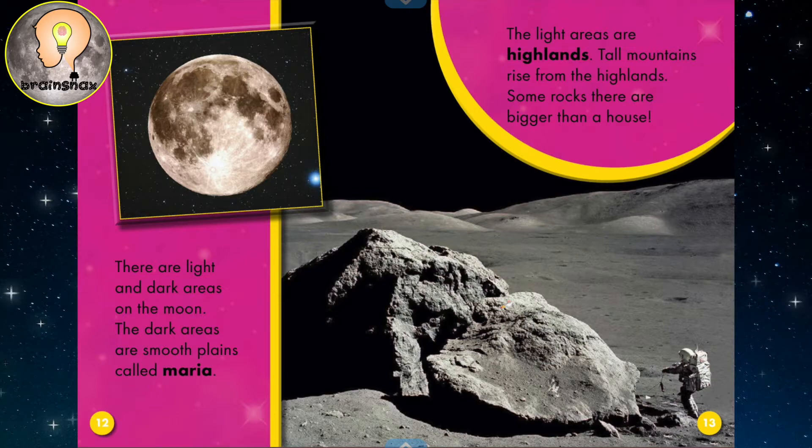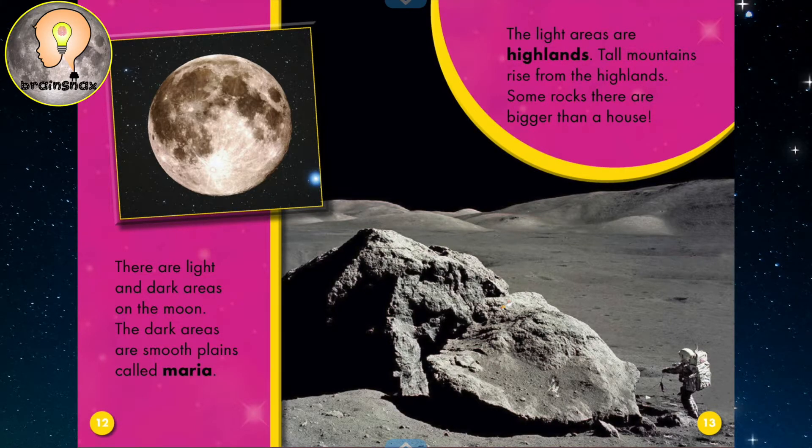There are light and dark areas on the moon. The dark areas are smooth plains called maria. The light areas are highlands. Tall mountains rise from the highlands. Some rocks there are bigger than a house. Look at the astronaut in this picture. He looks so small next to that rock.